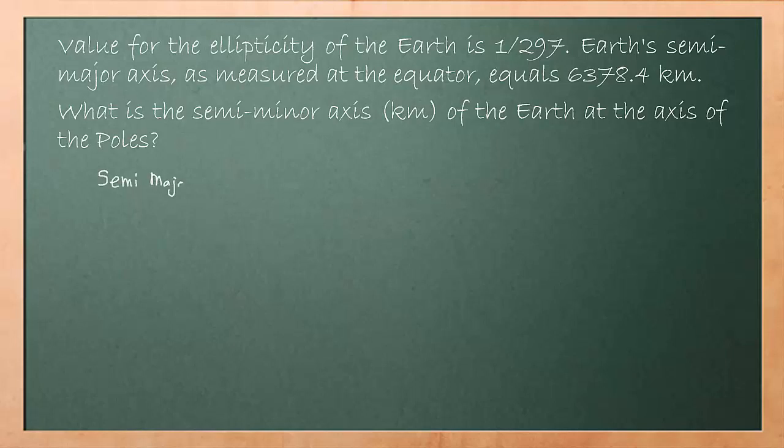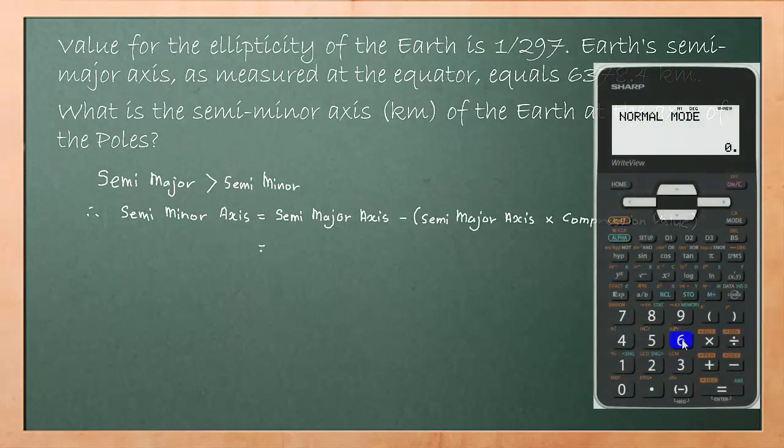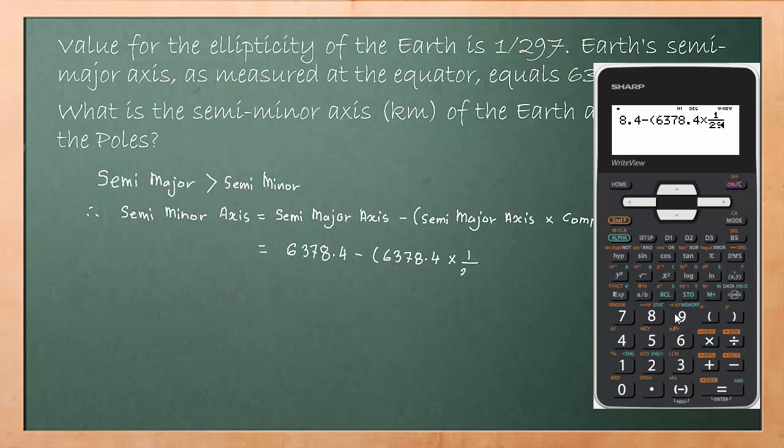We know that the earth's semi-major axis is larger compared to the earth's semi-minor axis. Thus, semi-minor axis equals semi-major axis minus (semi-major axis multiplied by compression value), which equals 6,378.4 minus 6,378.4 multiplied by 1 over 297, equals 6,356.9 kilometers.